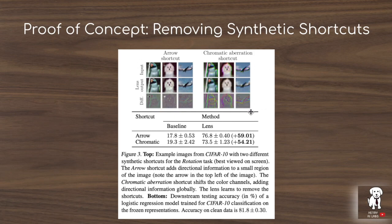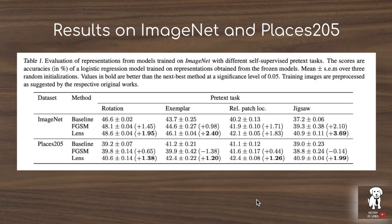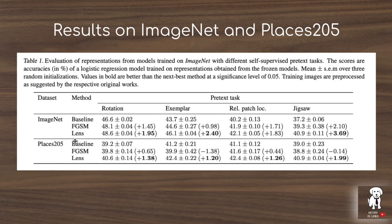This is already a great proof of concept showing how applying this lens filter can dramatically improve learned representations. The authors further test this in the more realistic setting on ImageNet and Places 205 datasets. You can see improvements from using the lens filter on rotation, exemplar, relative patch location, and jigsaw tasks. They also compare against the fast gradient sign method as a baseline for adversarial image perturbation, and in every case there is a gain from using the lens filter.